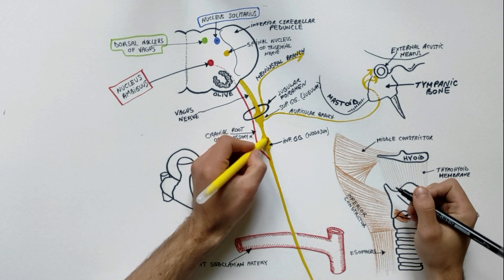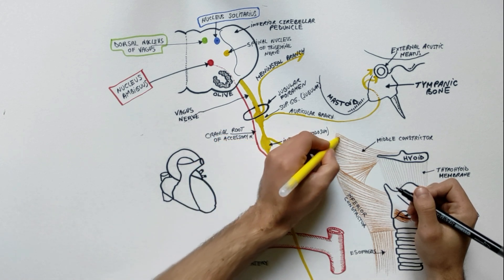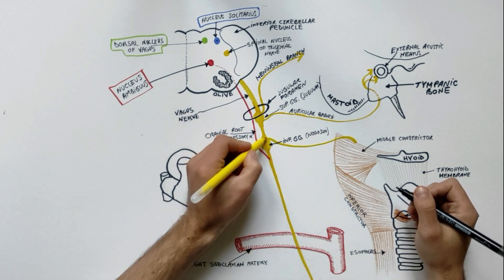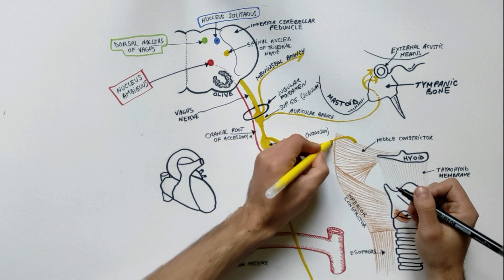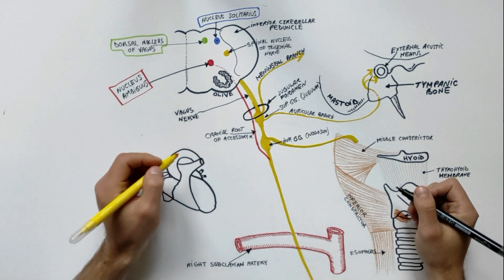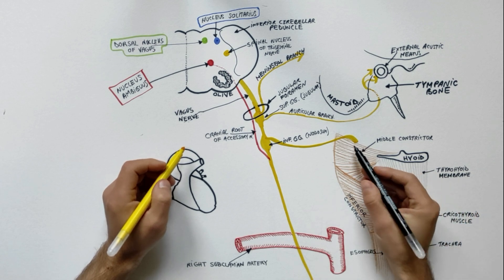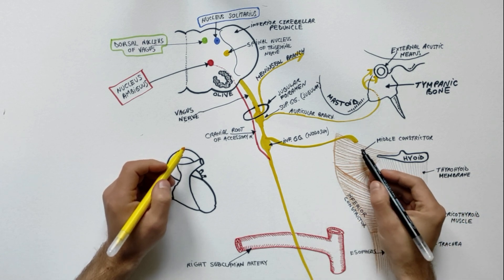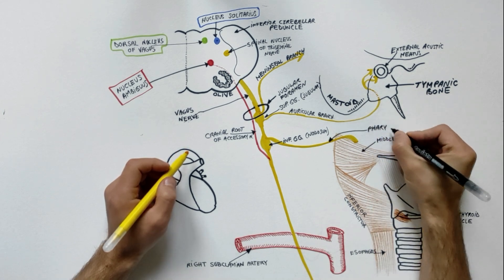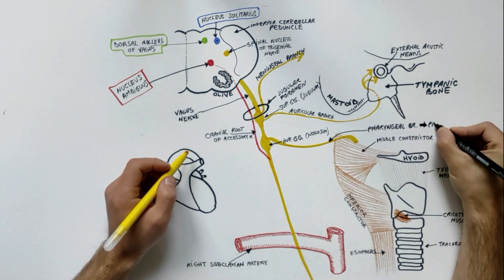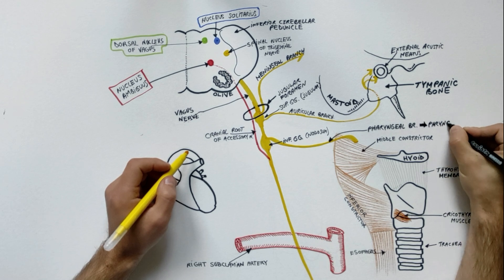The pharyngeal branch, the principal motor nerve of the pharynx, traverses the inferior ganglion and passes inferomedially to enter the pharynx at the upper border of the middle constrictor. It breaks up into the pharyngeal plexus to supply all the muscles of the pharynx and soft palate except stylopharyngeus and tensor palati.